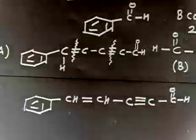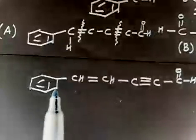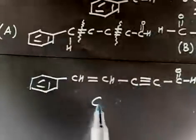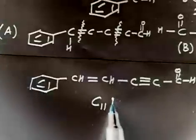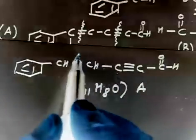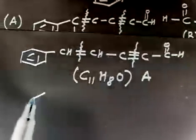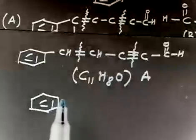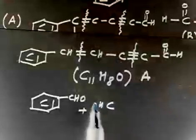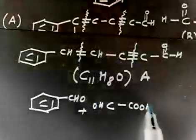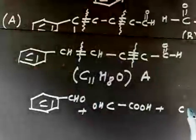So the structure of compound A is: Ph–CH=CH–C≡C–CHO. Checking: 6+1+1+1+1+1 = 11 carbons; hydrogens are 5+1+1 = 8; one oxygen. Molecular formula C11H8O is confirmed. Ozonolysis of the alkyne gives acid in any case, so breaking here and here gives: Ph–CHO (benzaldehyde) plus CHO–CHO plus COOH–COOH.